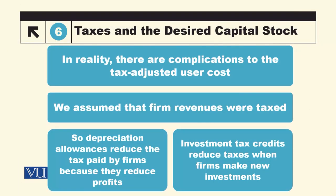ٹیکس کے حوالے سے ہم نے سادگی کے لیے assume کیا کہ government فرم کی revenue پر tax impose کرتی ہے۔ لیکن عموماً فرم پر tax ان کے profit پر لگتا ہے، جس میں depreciation بھی involve ہو جاتی ہے۔ جب depreciation زیادہ ہوگی تو profit کم ہو جائے گا۔ اسی طرح sometimes government investment tax credit دیتی ہے firms کو زیادہ investment کے لیے incentivize کرنے کے لیے۔